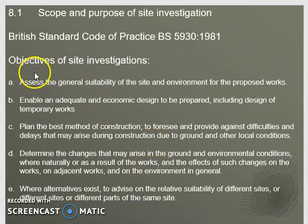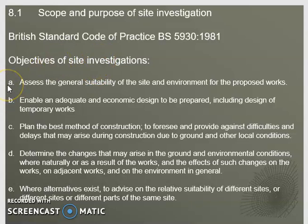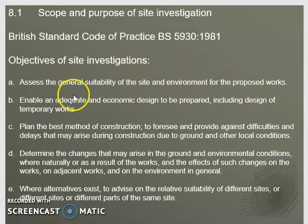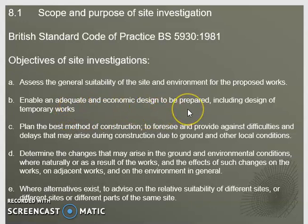There are objectives that we want to achieve when we carry out site investigation. Typically these objectives can be classified into five different areas. Firstly, we may want to look at the general suitability of the construction site and the environment for the proposed works. In addition, we will need to come up with an adequate and economic design, and that will include the need for temporary works especially for deep or wide excavations, and to plan the best method of construction.